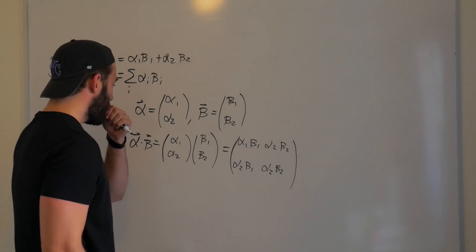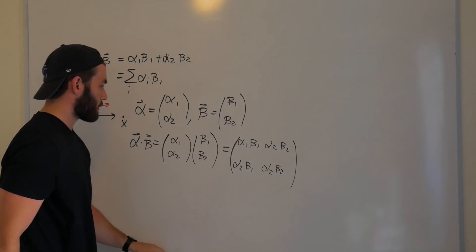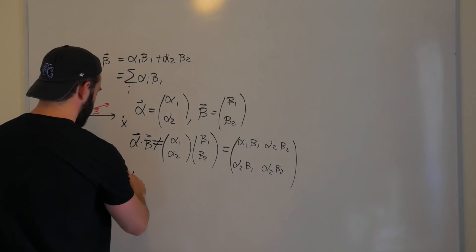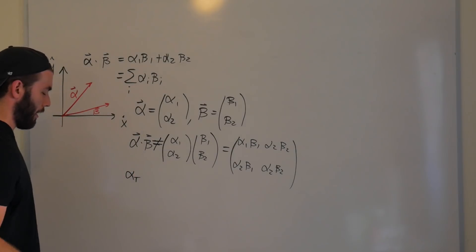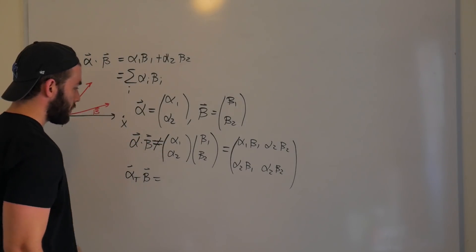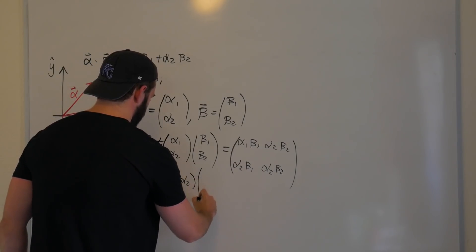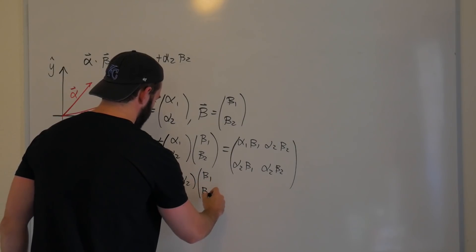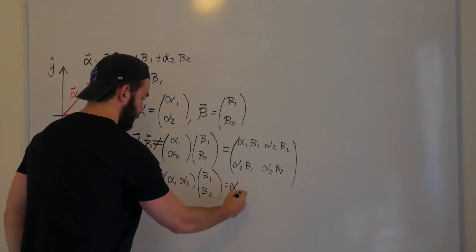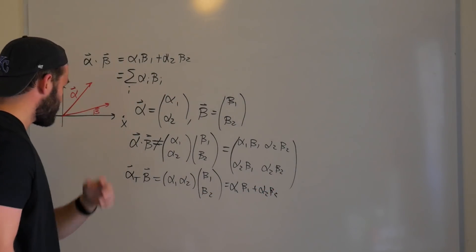When we take the dot product of two vectors, we should get a scalar, not a higher dimensional vector. So the secret to getting this relationship, getting this definition of the dot product, is actually to transpose one of these column vectors. So what we really want to do is we want to take the transpose of alpha times beta. And for a column vector, the transpose, nothing really changes about the components. The column just becomes a row. So this is just going to be alpha_1, alpha_2, beta_1, beta_2. And if we do our regular matrix multiplication, we get alpha_1 beta_1 plus alpha_2 beta_2. Great, so we got the relationship that we want.